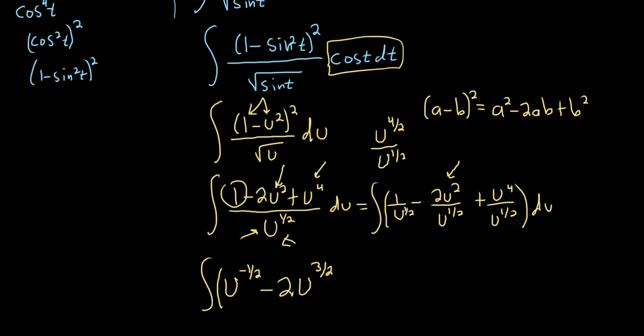Same thing here, we have u to the fourth over u to the 1 half. Think of it as u to the 8 halves over u to the 1 half. So 8 halves minus 1 halves is 7 halves. This problem is a lot messier than I thought it would be, and then du. I thought it was going to be like a one minute video. No. Okay, everything looks okay.